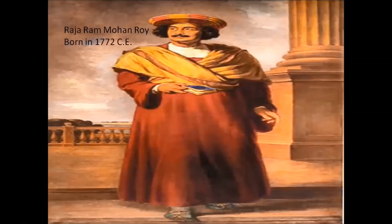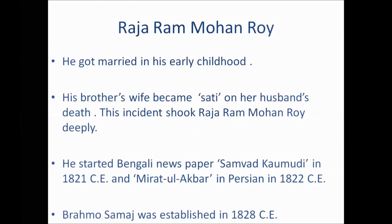First we will talk about Raja Ram Mohan Roy, who was the first among such reformers. He was born in the year 1772 CE in the Hooghli district of Bengal in Radha Nagar village, in a Brahmin family. He got married in his early childhood. His brother's wife became Sati on her husband's death, and this incident shook Raja Ram Mohan Roy deeply, as he witnessed it in front of his own eyes and in his own home.